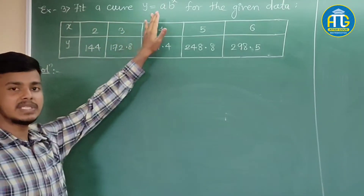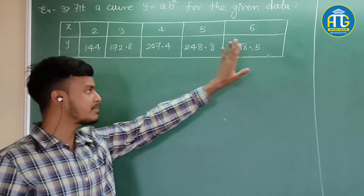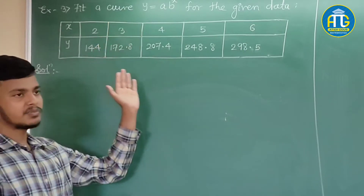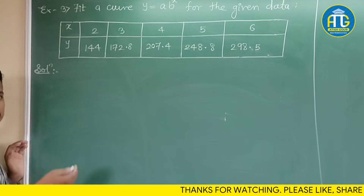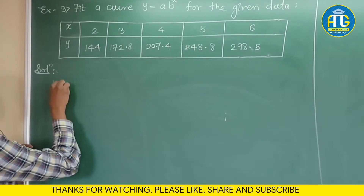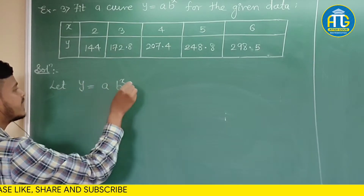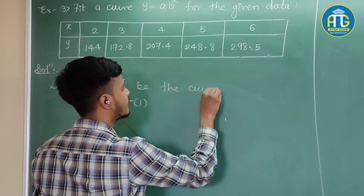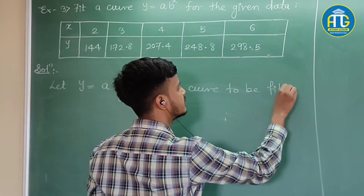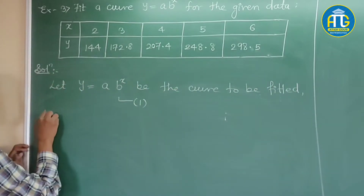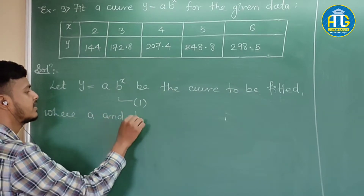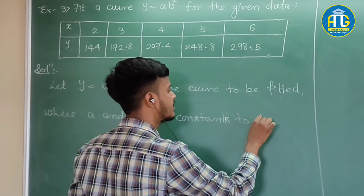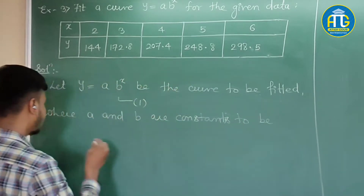This question says: fit the curve y is equal to a times b to the power x for the given data. As you know, the very first step of the working rule says to write down the power curve to be treated and identify the unknowns. So let y = a·b^x be the curve to be treated, where a and b are constants to be determined.